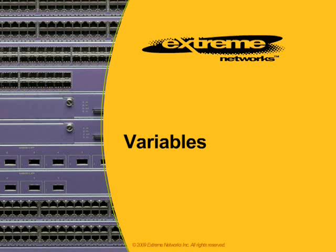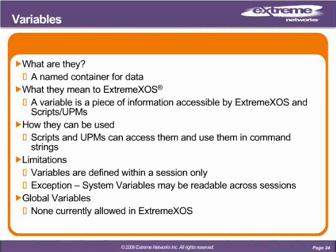In the next section we're going to discuss variables. What is a variable? It's a named container for data. In any scripting or coding language — whether Java, where it sits in JVM memory space, C where you use a pointer or reference to a memory location, or ExtremeXOS where it's a container within the Tcl engine — in short, it's a named container for data. In EXOS, it's information accessible by EXOS scripts and UPMs, the named containers that scripting uses when it wants to make changes or interact.